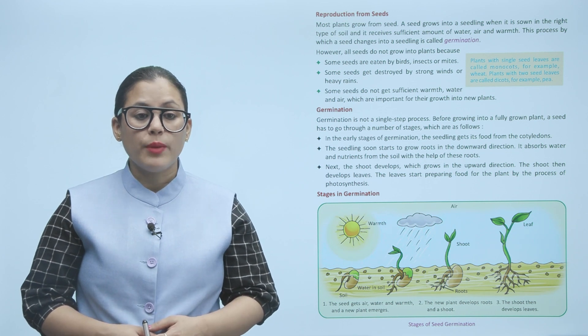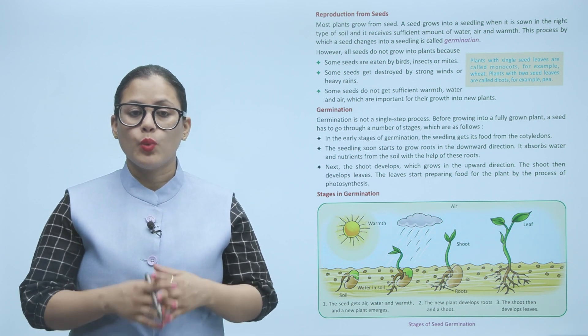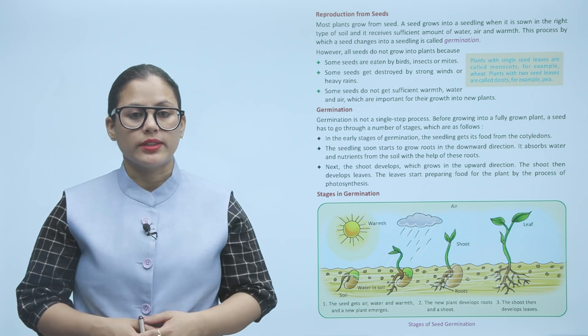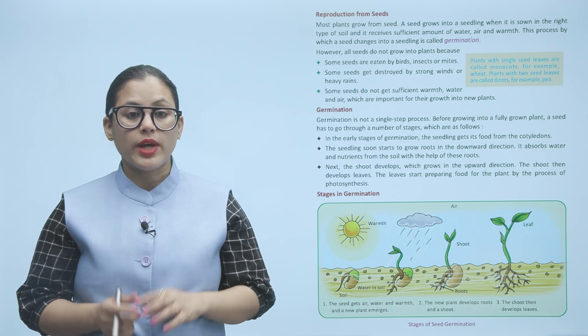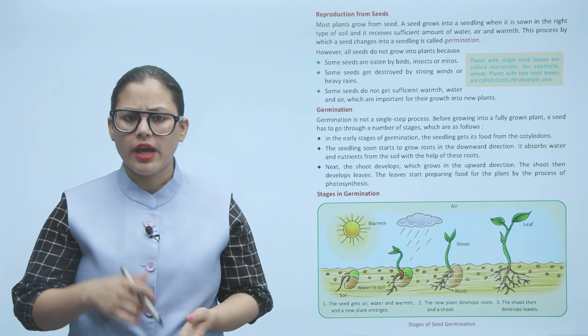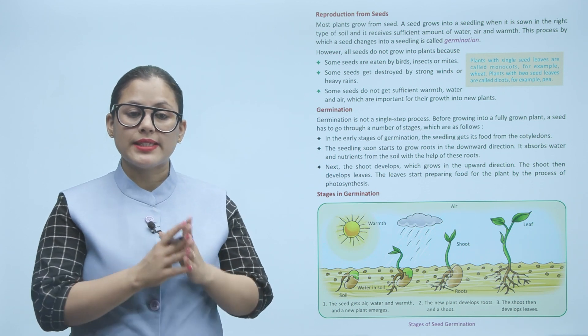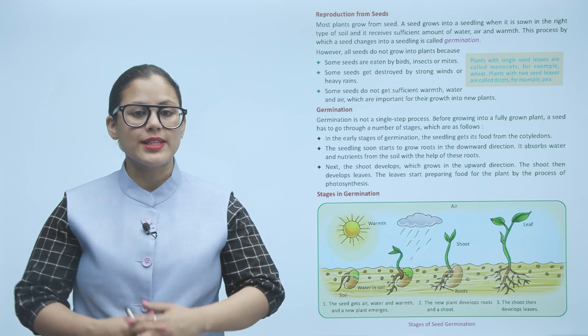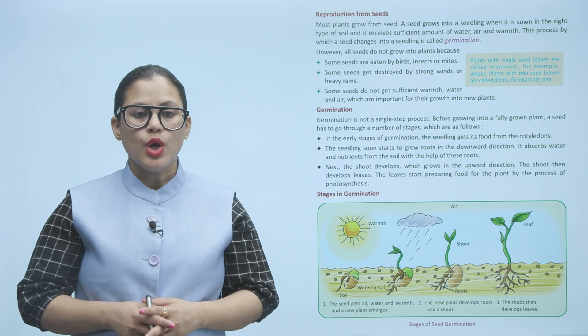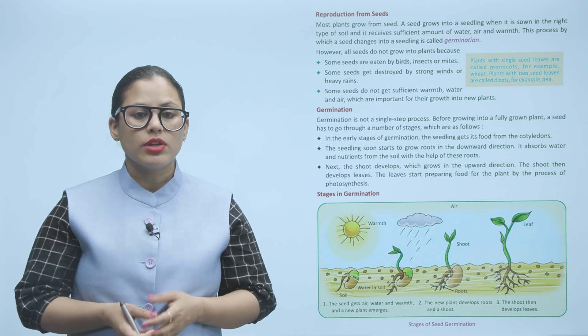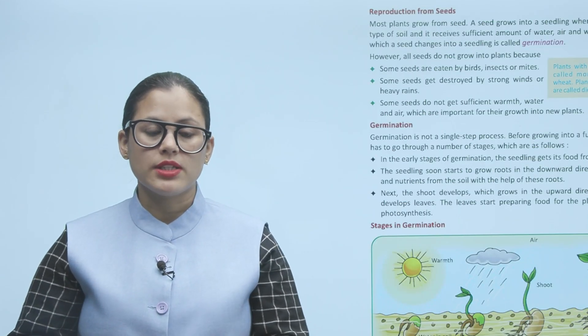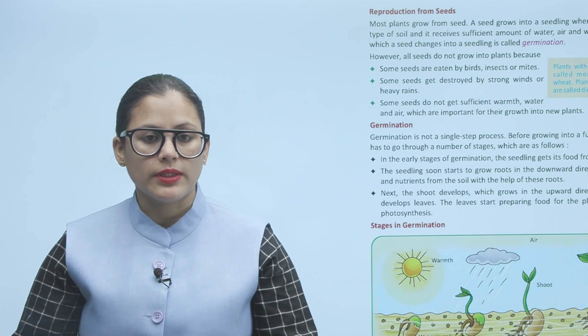Some seeds are eaten by birds, insects, or mites. Some seeds get destroyed by strong winds or heavy rains. Some seeds do not get sufficient warmth, water, and air which are important for their growth into new plants.